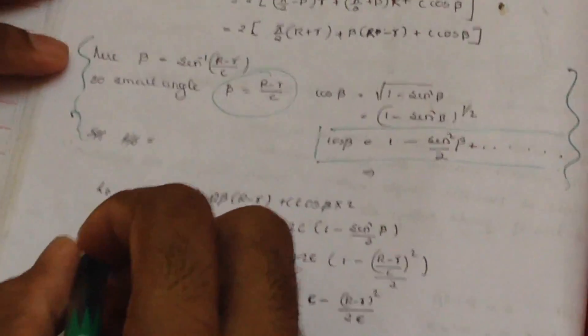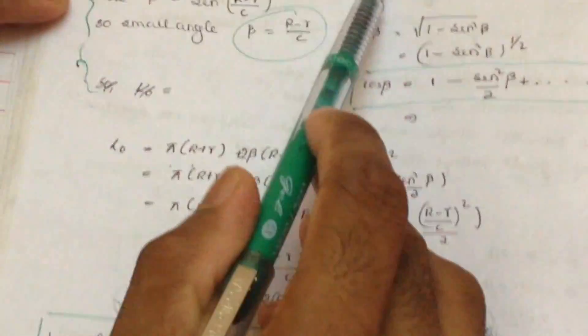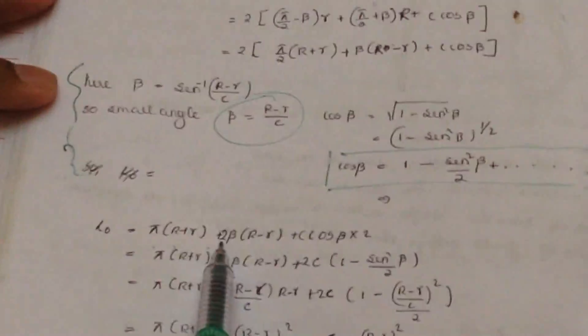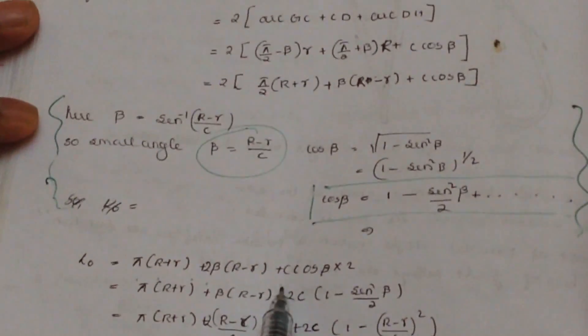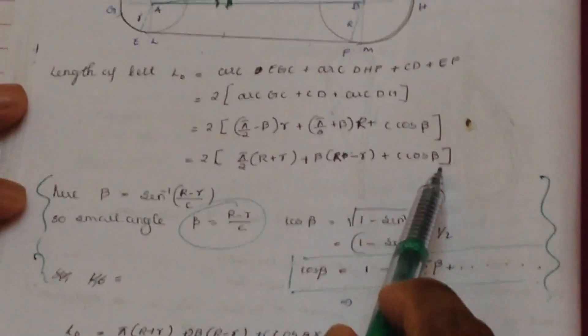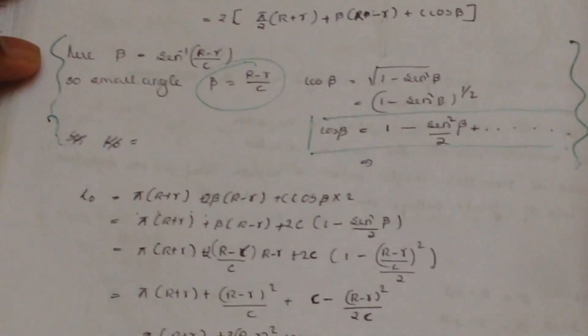So for finding the length of the open belt drive, L₀ is equal to π(R + r) plus 2β(R − r) plus 2·C·cos β, where β is the angle such that sin β = (R − r)/C.